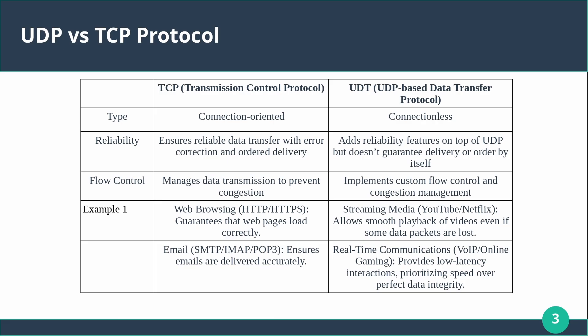We need to learn about the differences between TCP and UDP. TCP is a connection-oriented protocol; on the other hand, UDP is connectionless. In terms of reliability, TCP ensures data transfer with error correction and ordered delivery, while UDP doesn't guarantee delivery or order by itself. In terms of flow control, TCP manages data transmission to prevent congestion, whereas UDP implements custom flow control and congestion management.